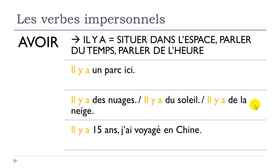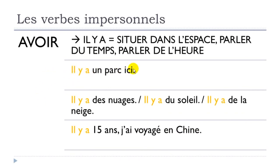And if you want to talk about a period of time, il y a quinze ans — this is quite interesting, because il y a quinze ans means '15 years ago,' so il y a can mean 'ago.' For example: il y a quinze ans, j'ai voyagé en Chine — voyager is 'to travel,' in the passé composé form — en Chine means 'in China.' So: 15 years ago, I travelled to China.